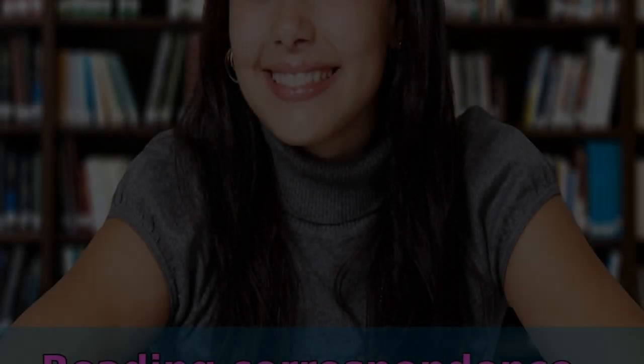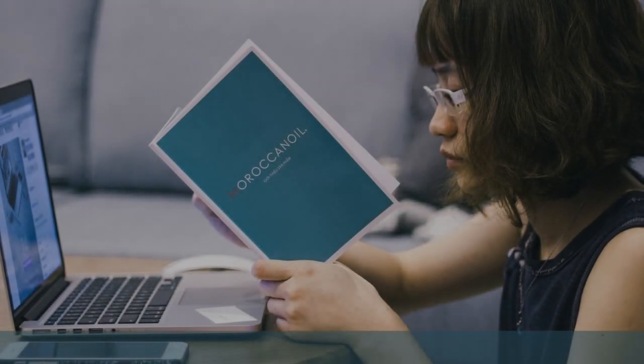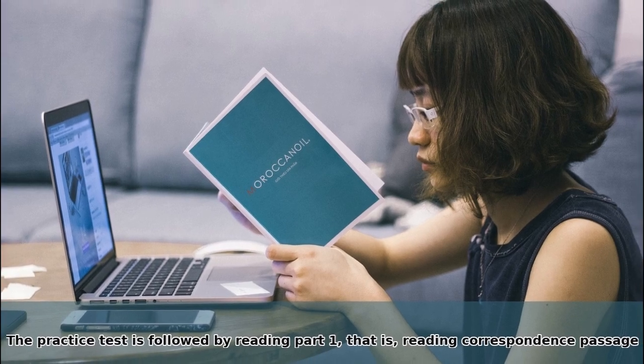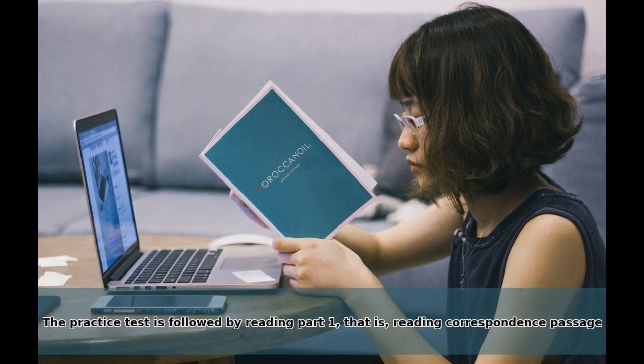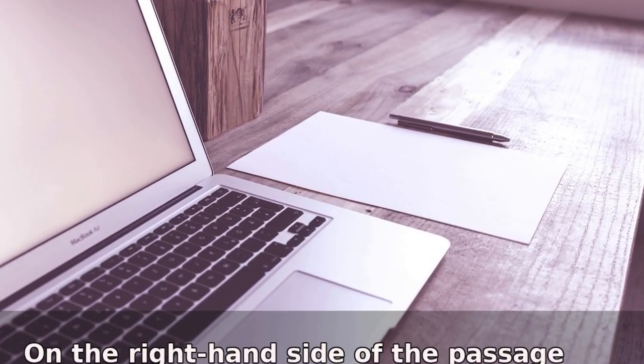Now start with part one. Part one is reading correspondence. The practice test is followed by reading part one, that is reading correspondence. Passages provided on the left hand side, which is generally in the form of an email. After going through the passage, you are supposed to answer the questions provided on the right hand side of the passage.